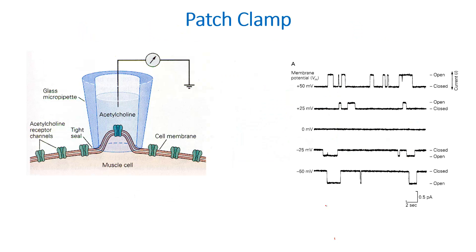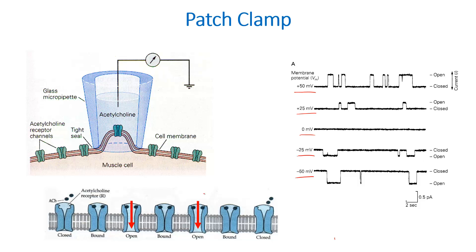Recall that with the patch clamp technique, the experimenter clamps the membrane potential at a chosen value — for example, plus 50 millivolts, plus 25, 0, minus 25, or minus 50 millivolts. This is similar to using a thermostat to set the desired temperature in a room. The experimenter then measures how much current flows through an ion channel at each of those membrane potentials.